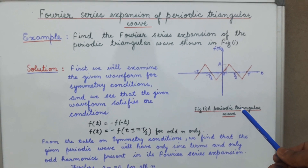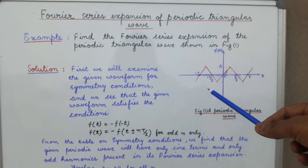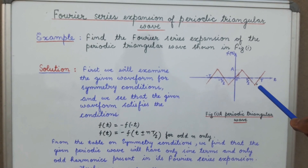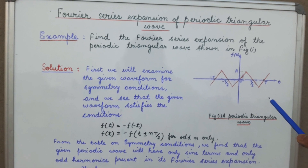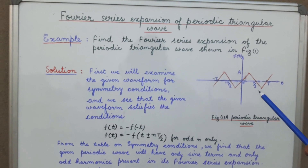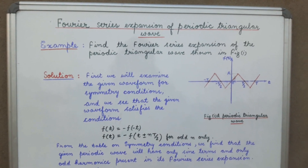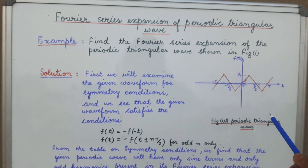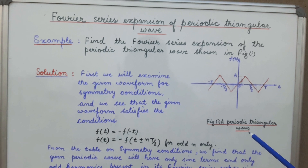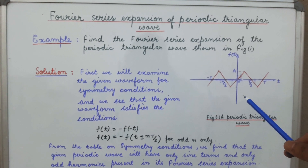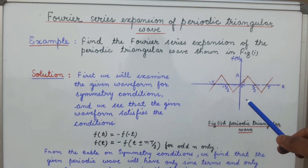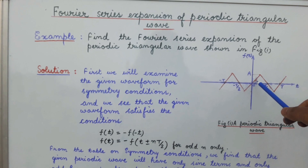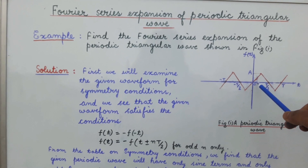As we can see from figure 1, this is a periodic triangular wave. We have to find out the Fourier series expansion of this given periodic triangular wave. The first step will be to examine the given waveform for the symmetry conditions. On examining the symmetry conditions, we find that for f(t):